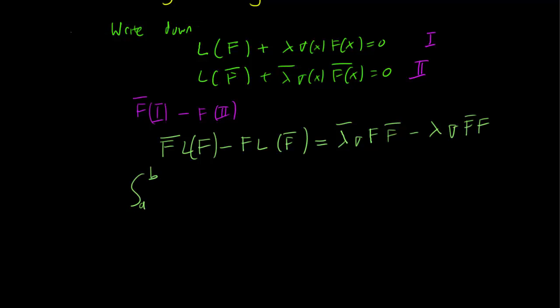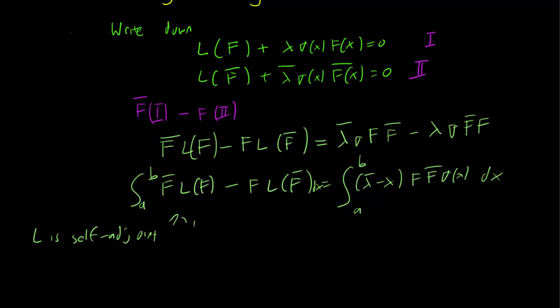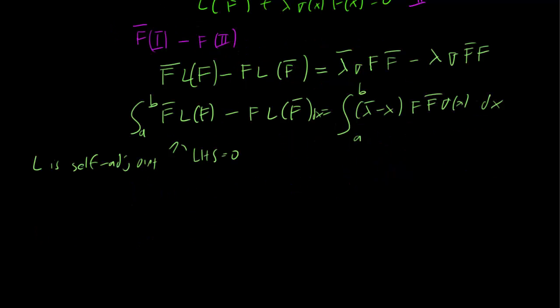We integrate both sides from A to B. The integral from A to B of f bar L(F) minus f L(F bar) equals the integral of lambda bar minus lambda times F(x) F bar(x) sigma(x) dx. Now remember that L is self-adjoint so this entire term goes to 0, and we can pull the lambda terms out since they don't depend on x. We just get the integral from A to B of F(x) F bar(x) sigma(x) dx equals 0.